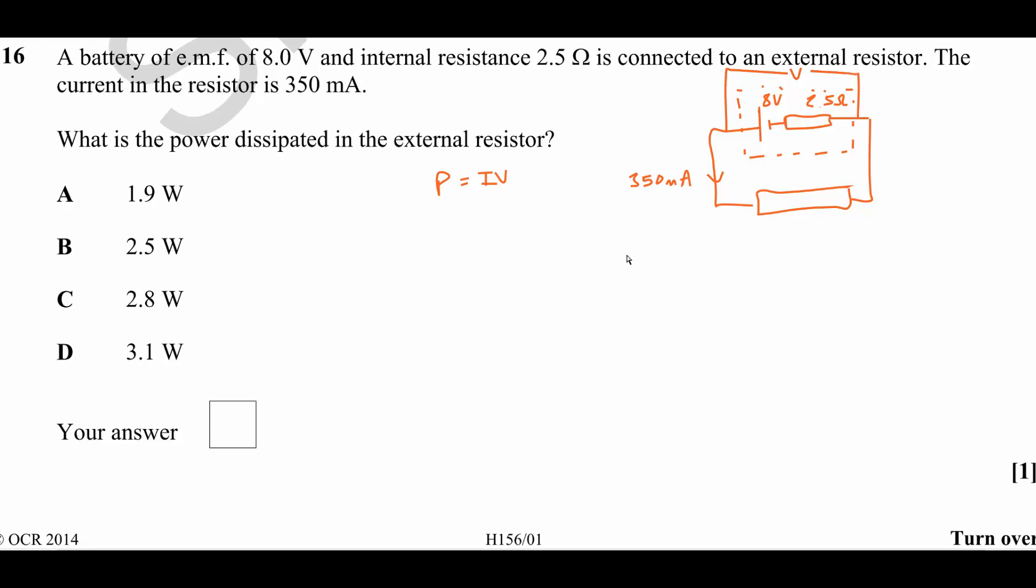To do that, we can refer to our formula sheet, which tells us that EMF is equal to the terminal PD plus the lost volts, the current multiplied by the internal resistance. We can rearrange to find V, which is equal to the EMF minus the lost volts.